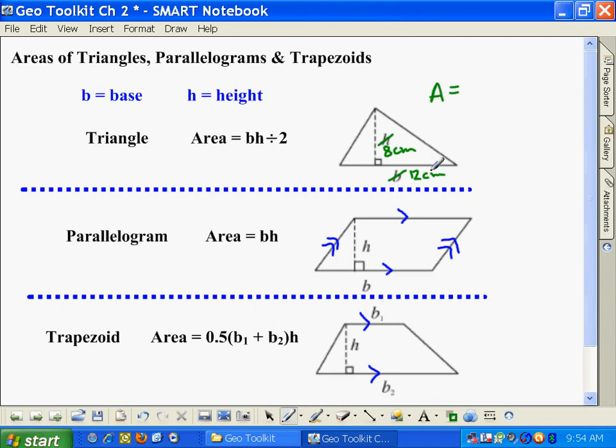You take the base times the height, then divide by 2. So it's 12 times 8, which is 96, and 96 divided by 2 is 48. The answer is 48 square centimeters. Don't forget your units.